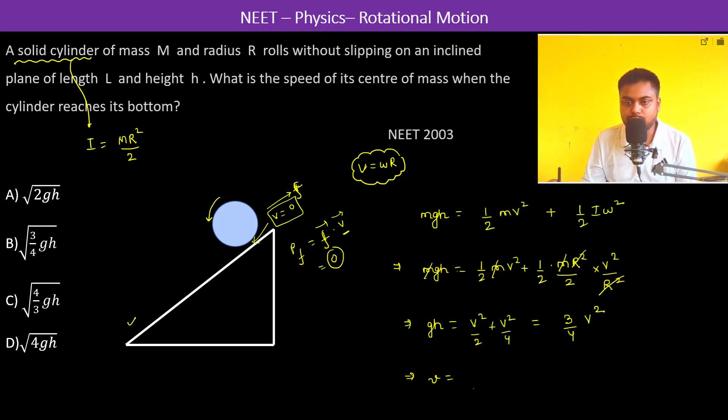Therefore, v is equal to root over 4 by 3 into gh. So, the answer is going to be c. Thank you.